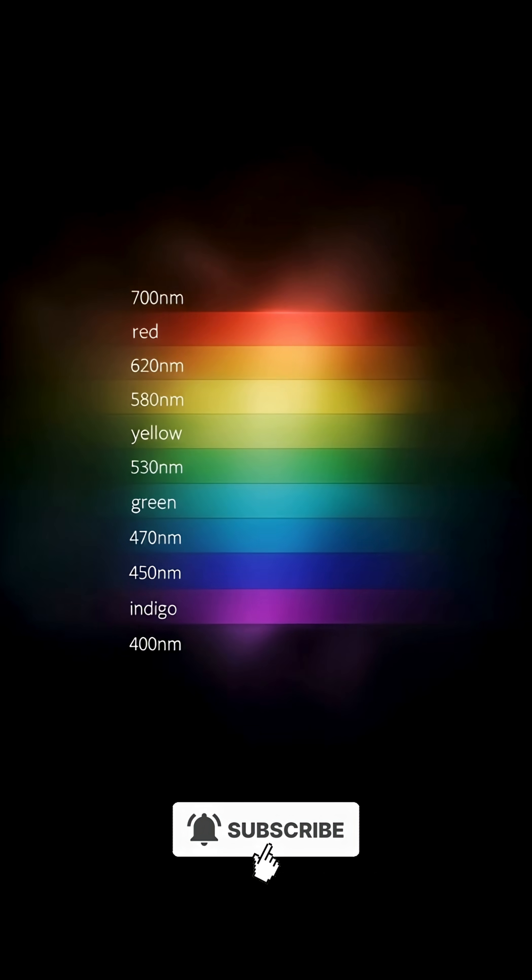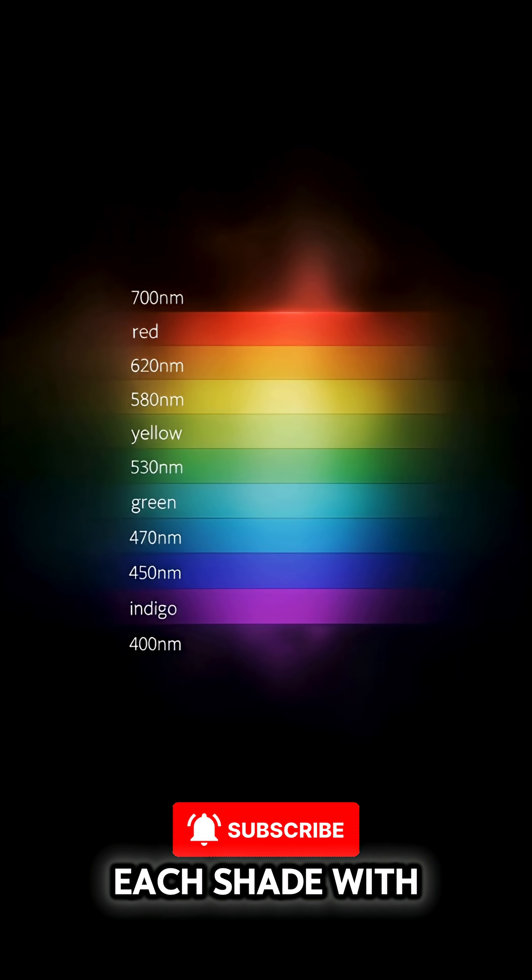Passing through a prism, light separates, revealing a rainbow, each shade with its wavelength.